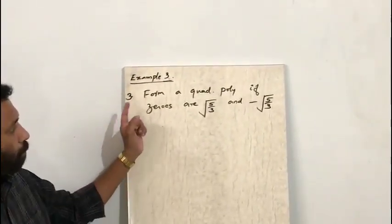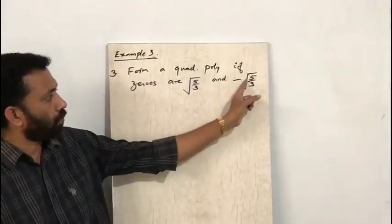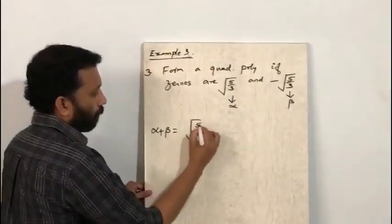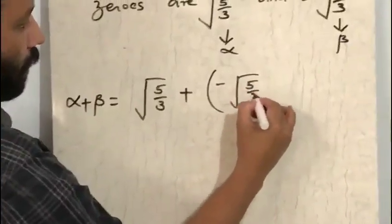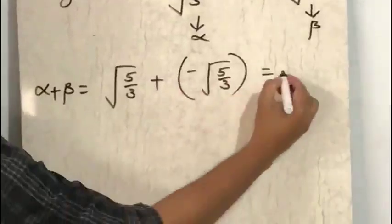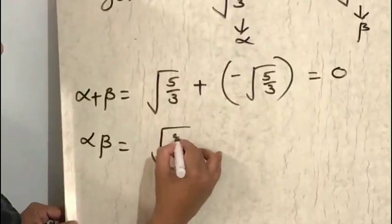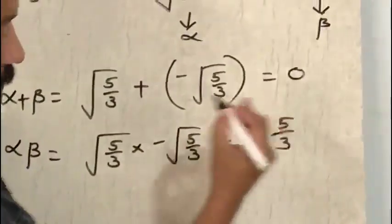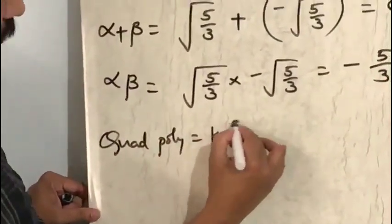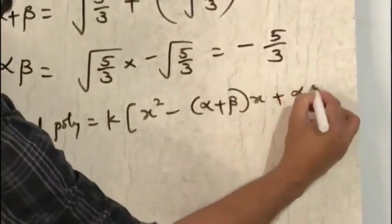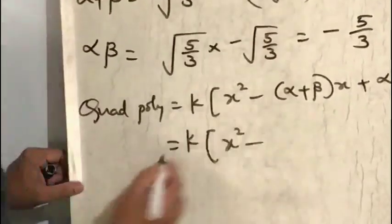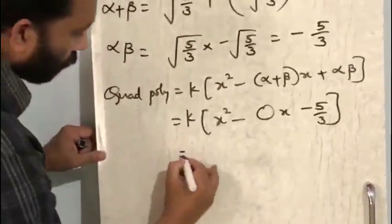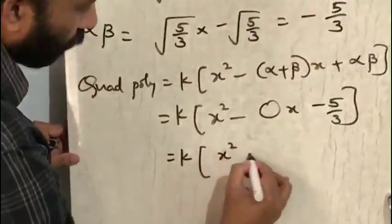Example 3: Form a polynomial if zeros are √5/3 and −√5/3. Take alpha equal to √5/3 and beta equal to −√5/3. Alpha plus beta equals √5/3 plus (−√5/3); since one is positive and one is negative, the sum is 0. Alpha beta equals √5/3 into (−√5/3), giving −5/3. So the quadratic polynomial is k into x squared minus 0 times x plus (−5/3), and since the middle term is 0, we have k into x squared minus 5/3.